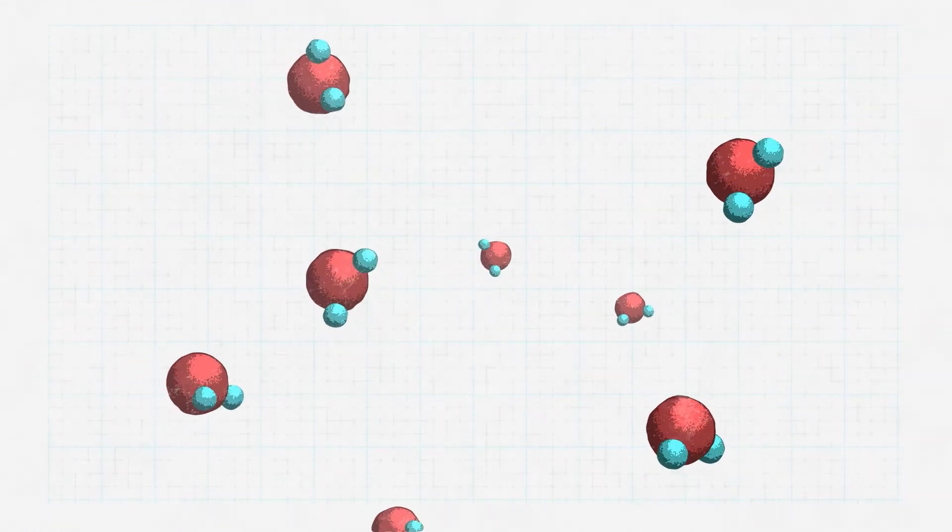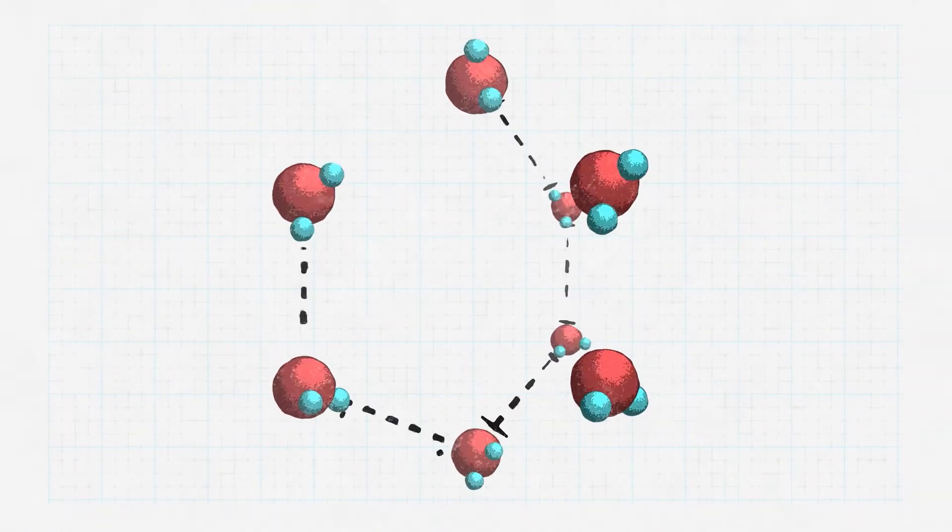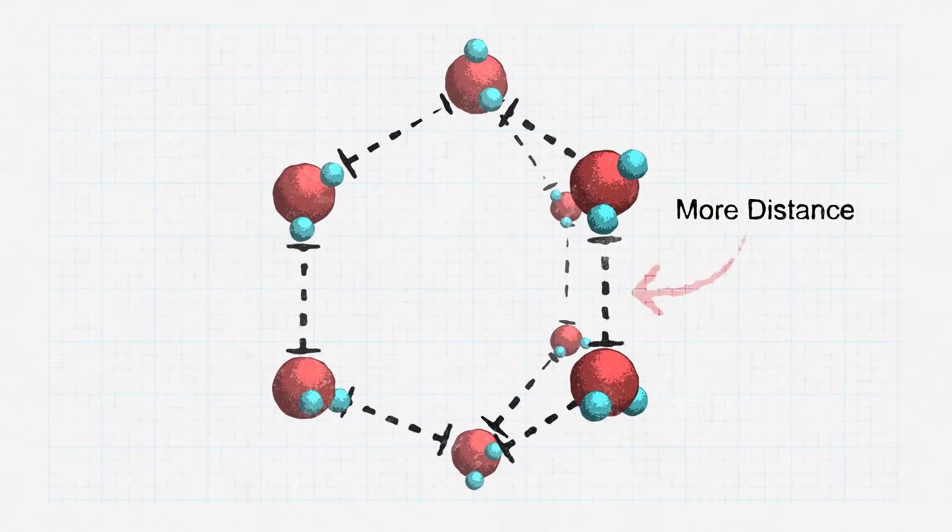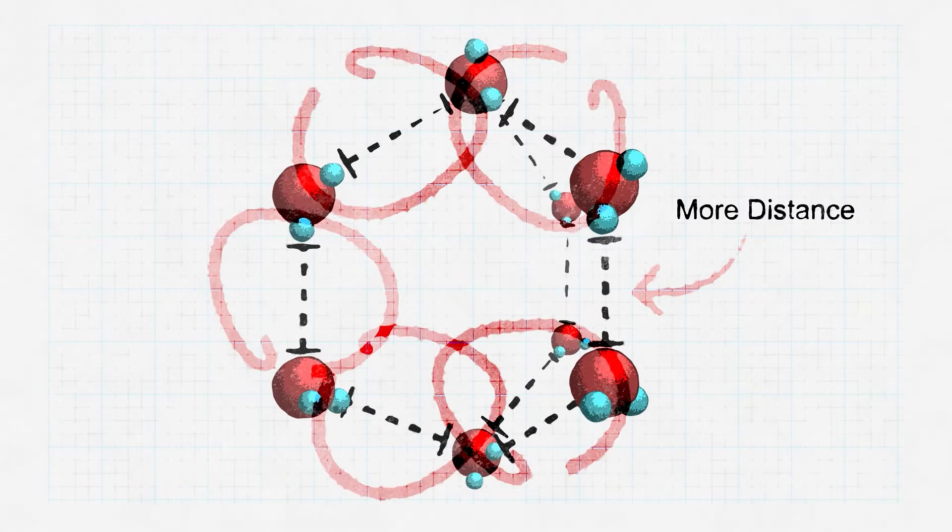As the temperature cools and the molecules arrange themselves into these hexagonal lattices, the distance between each molecule becomes greater because the hydrogen bonds become more frequent. This is why when you freeze a bottle of water it generally explodes. The space in between molecules has literally expanded thanks to the properties of hydrogen bonding and increased the water's volume by 9%. So because these hexagonal lattice structures form to create more space between molecules thanks to hydrogen bonding, the material is less dense and thus buoyant in water's liquid form.